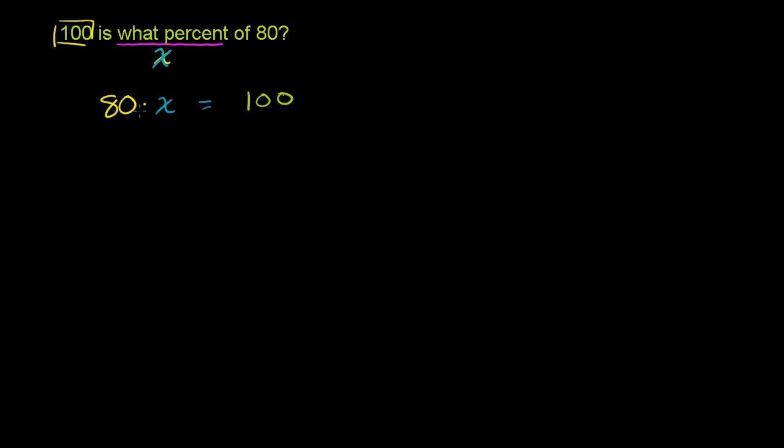And if we just solve this equation as it is, we're going to get a value for x, and what we need to do is then convert it to a percent. Another way you could view this is 100 is what you get when you multiply what by 80. Then you would have gotten this number, and then you could have converted it to a percent. So this is essentially the equation, and now we can solve it.